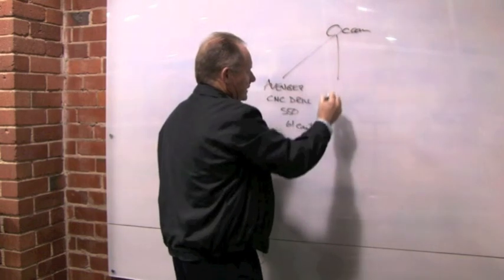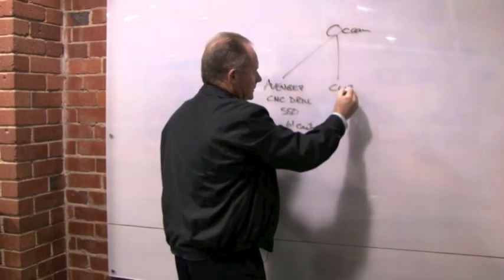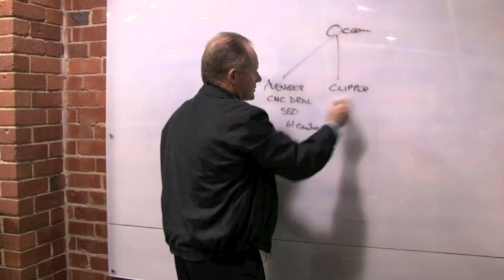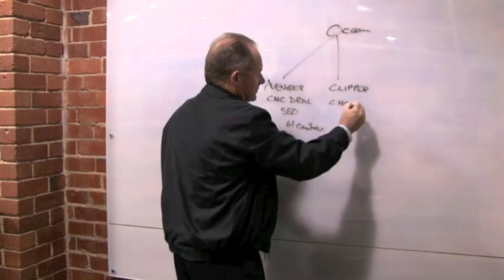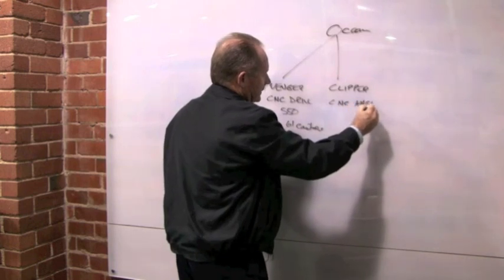The second machine that we have is called the Clipper. The Clipper is a CNC angle line for doing angle and flat bar.